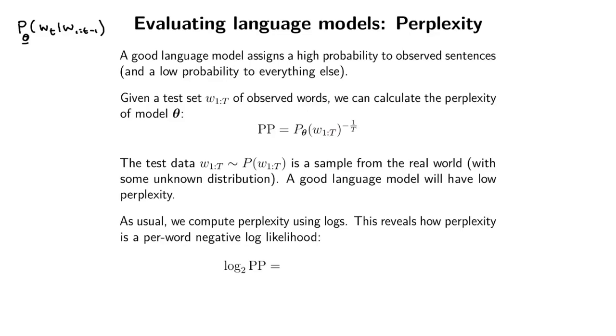And then perplexity is this somewhat weirdly normalized probability of that test set. So we pass the test set through our training data, we get this probability, and then we normalize by taking the exponential of minus 1 over the number of words t. So this is just a normalizer, and it will make sense in a second why we're normalizing in this way.